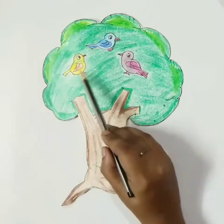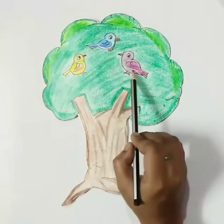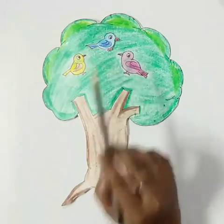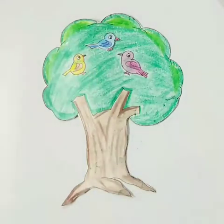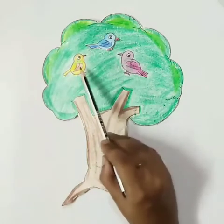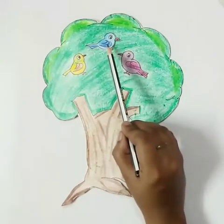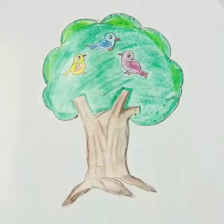One, two, three. So children, there are three birds sitting on a tree now. It means two birds plus one bird is equal to three birds.